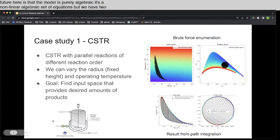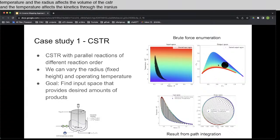We can vary the radius and the operating temperature. And the radius affects the volume of the CSTR, and the temperature affects the kinetics through the Arrhenius equation. And so this figure on the top with the colors shows the input space and how it maps to an output space. So as we vary the radius and we vary the temperature, you can see that we get this colored range in terms of solution that maps nonlinearly to the right.